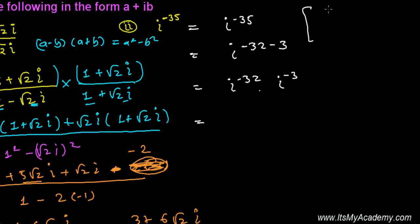For powers of iota, whenever iota has a power that's a multiple of 4, whether positive or negative, you'll always get the value as 1, positive 1. So this is giving you value 1.